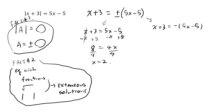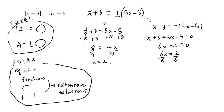Over here, if I move everything to this side, the minus will become plus. x plus 5x is 6x. 3 minus 5 is negative 2. Divide by 6 and you get x equals 2 sixths, which reduces to 1 third.